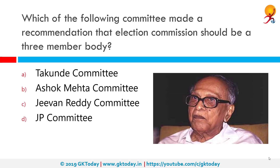Which of the following committee made a recommendation that the election commission should be a three-member body? The correct answer is the Tarkunde committee. Jayaprakash Narayan, on behalf of the Citizens for Democracy, had appointed a committee to study and report on a scheme of electoral reforms in 1974. The members included V.M. Tarkunde, M.R. Masani, etc., and it is known as either the JP committee or Tarkunde committee.